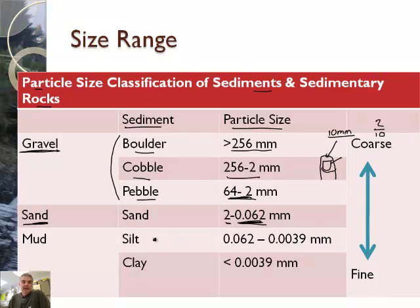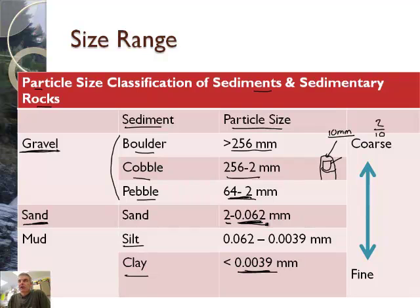Silt is smaller and clay is very, very small — you need a microscope to be able to measure the size of clay particles. We can also say that the larger particles are coarse, while the smaller ones are fine.